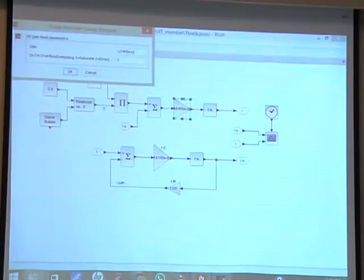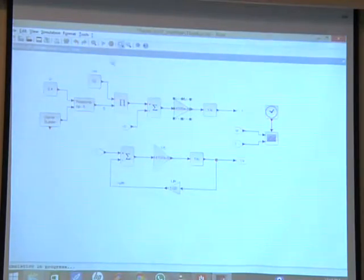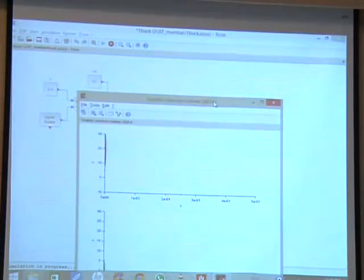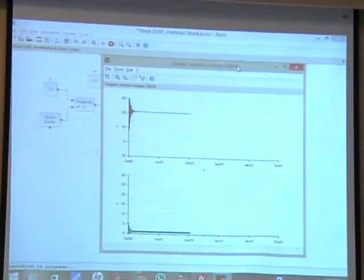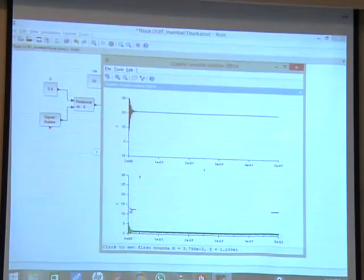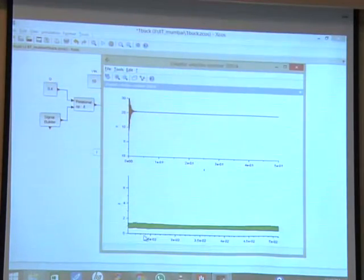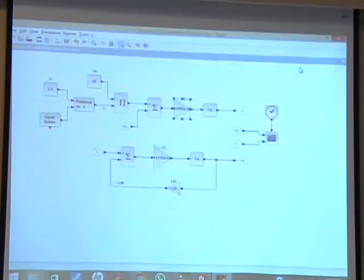Suppose I increase the inductor value, what happens is my output ripple will get reduced. Since I have increased my inductor value, my inductor current ripple will get reduced here. We can observe that. The ripple will go on decreasing as we increase L and C value. This is how we analyze the circuits, power electronic circuits.